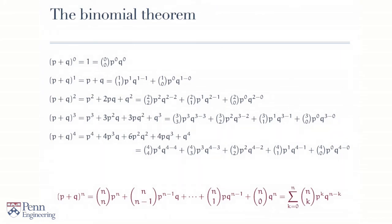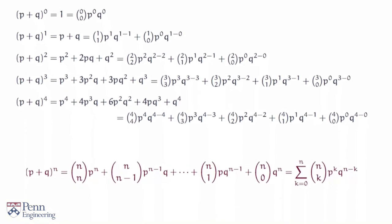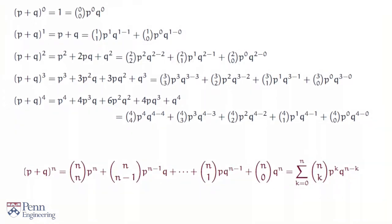The n-th power of a sum p plus q can be written as an expansion involving the binomial coefficients, starting with n choose n and running all the way down to n choose 0. To each binomial coefficient, you attach a power of p and a power of q, and the key property is that the powers of p and q must add to n.